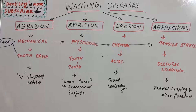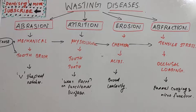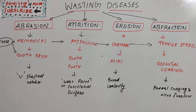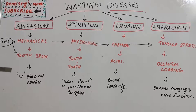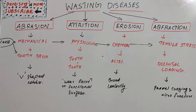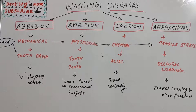Wasting disease, by definition given in Carranza's Textbook of Periodontology, is defined as a gradual loss of tooth substance which is characterized by the formation of smooth polished surface without regard to the possible mechanism of this loss. So tooth structure loss without a defined mechanism — that is wasting disease.